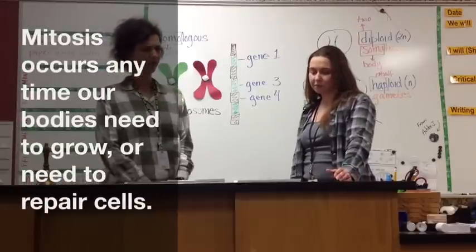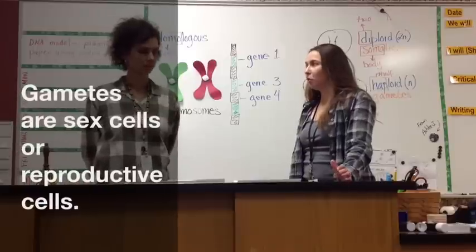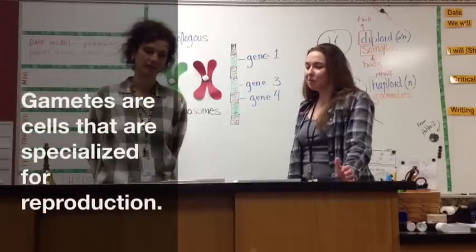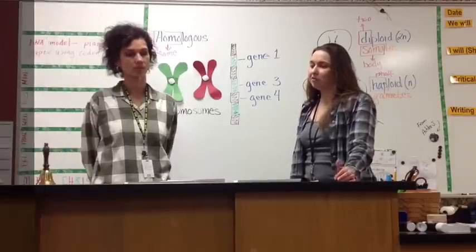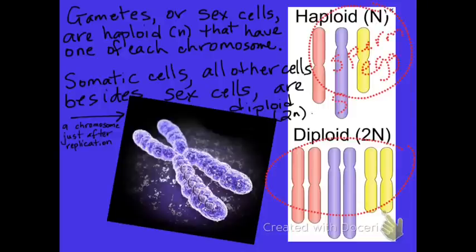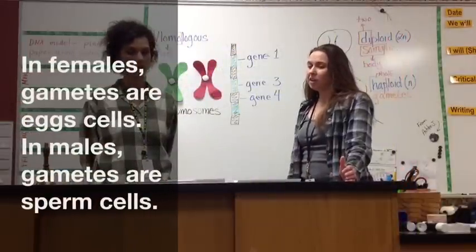What are gametes? Gametes are sex cells or reproductive cells — the cells that are specialized for reproduction. Gametes, or sex cells, are haploid, meaning they have one of each chromosome. Somatic cells are diploid and have two sets of chromosomes. Examples of gametes would be sperm, egg, or spores, while somatic cells include skin cells, muscle cells, and root cells. In females, gametes are egg cells, and in males, gametes are sperm cells.